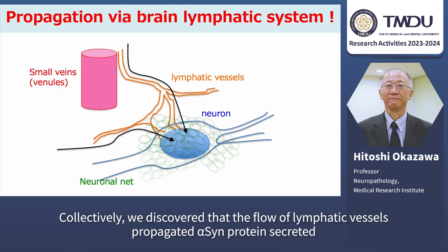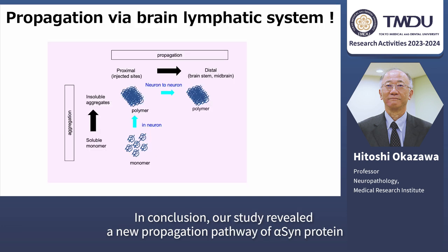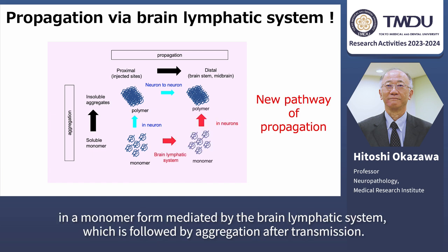Collectively, we discovered that via the flow of lymphatic vessels, propagated alpha-synuclein proteins secreted or released from neurons could reach different neurons in remote brain lesions in a very short time. In conclusion, our study revealed a new propagation pathway of alpha-synuclein protein in a monomer form mediated by the brain lymphatic system, which is followed by aggregation after transmission.